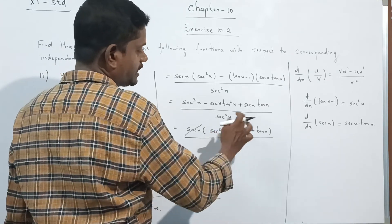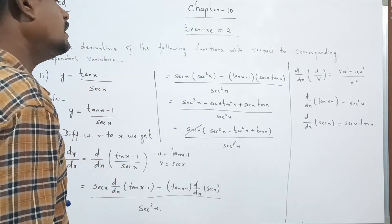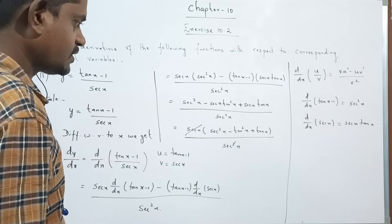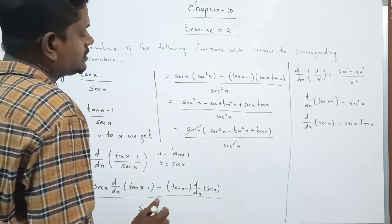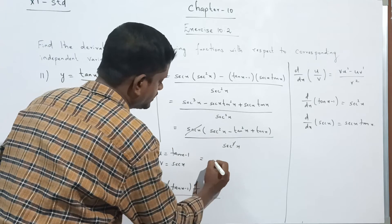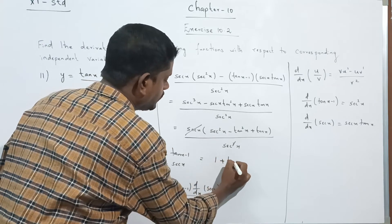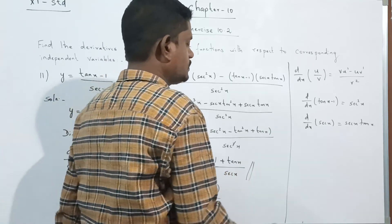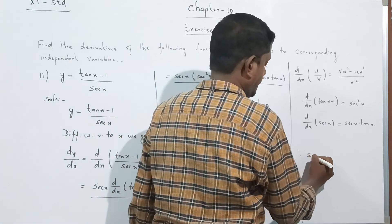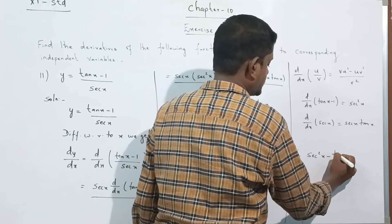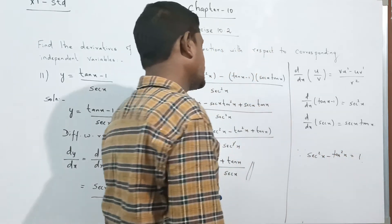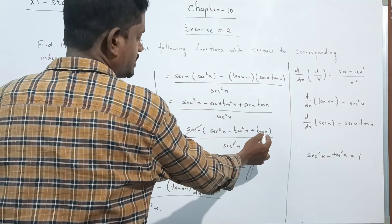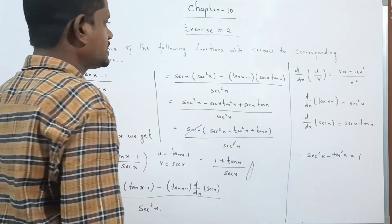Now, sec²x minus tan²x equals 1. This is a standard trigonometric identity. So sec²x minus tan²x = 1. Therefore the expression simplifies to 1 + tan x, all divided by sec x. So the final answer is (1 + tan x) / sec x.